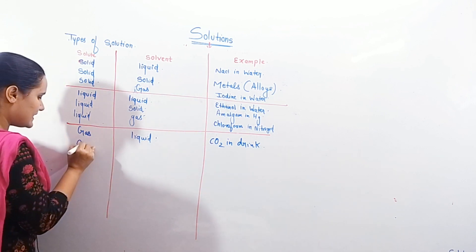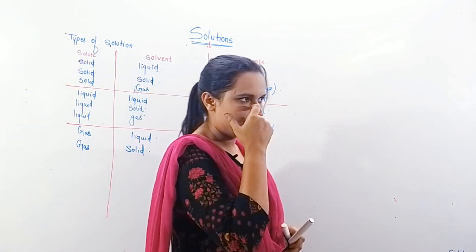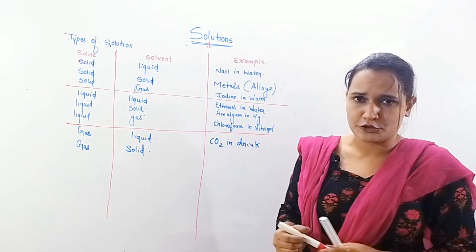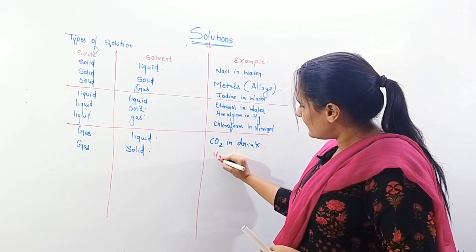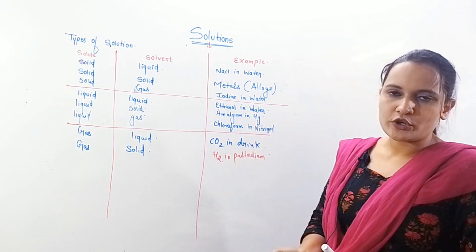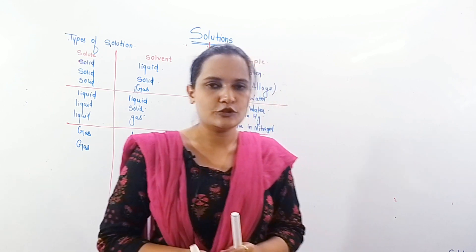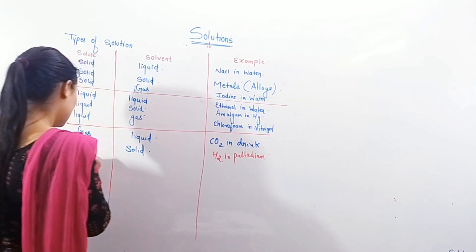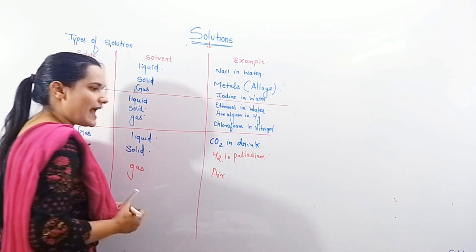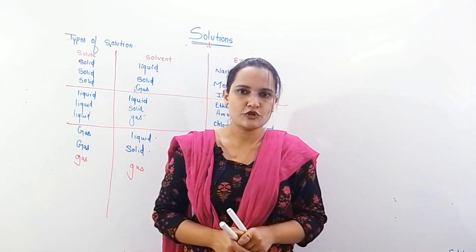For gas in solid, the example is hydrogen gas (H2) dissolved in palladium metal. Another example is pumice stone, which is very light because gas is trapped inside it. And finally, gas in gas is very simple — our air is a combination of many gases, so air itself is an example of gas in gas.